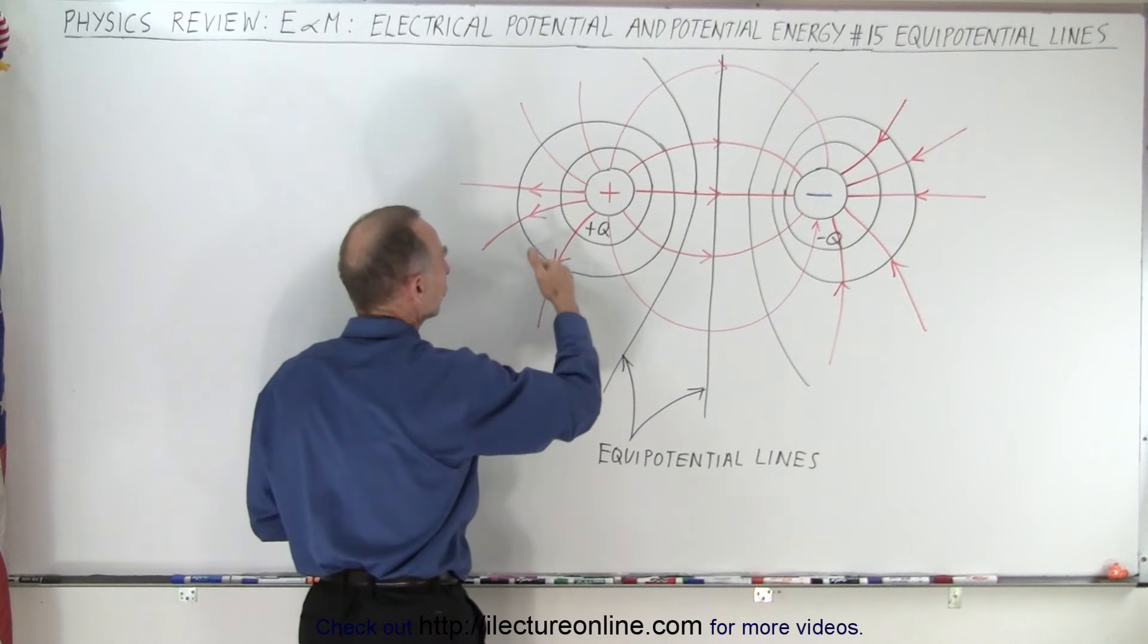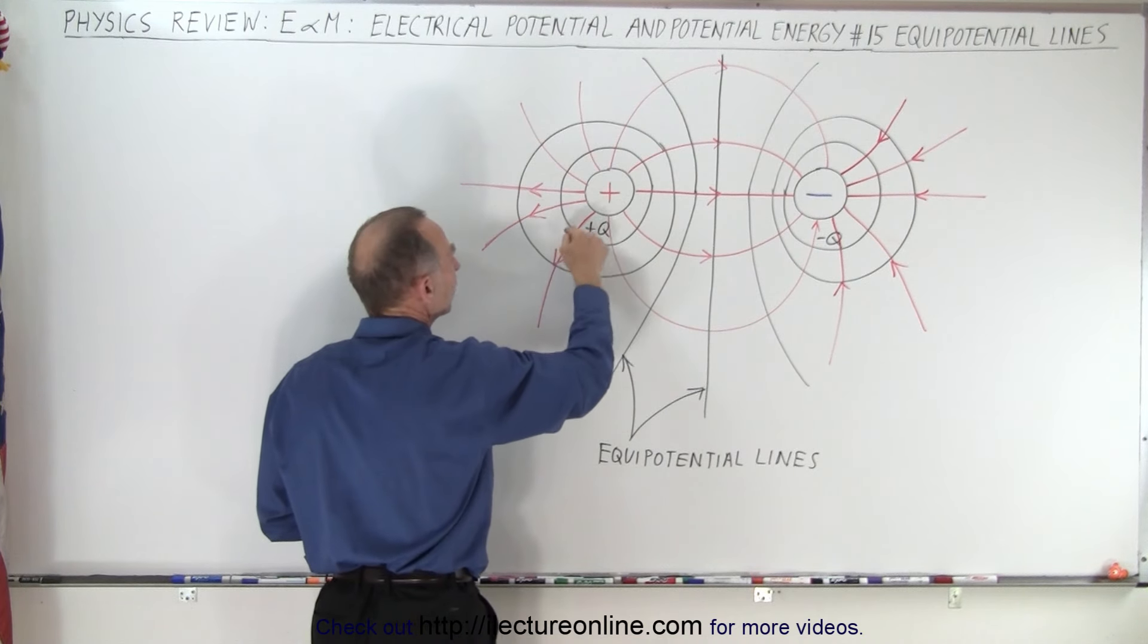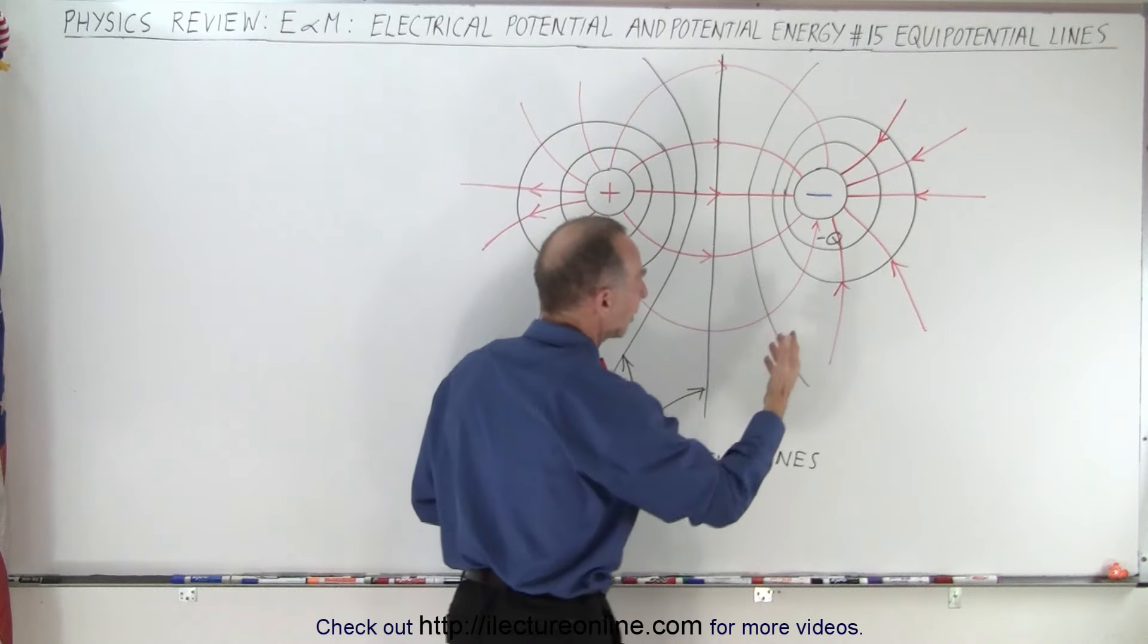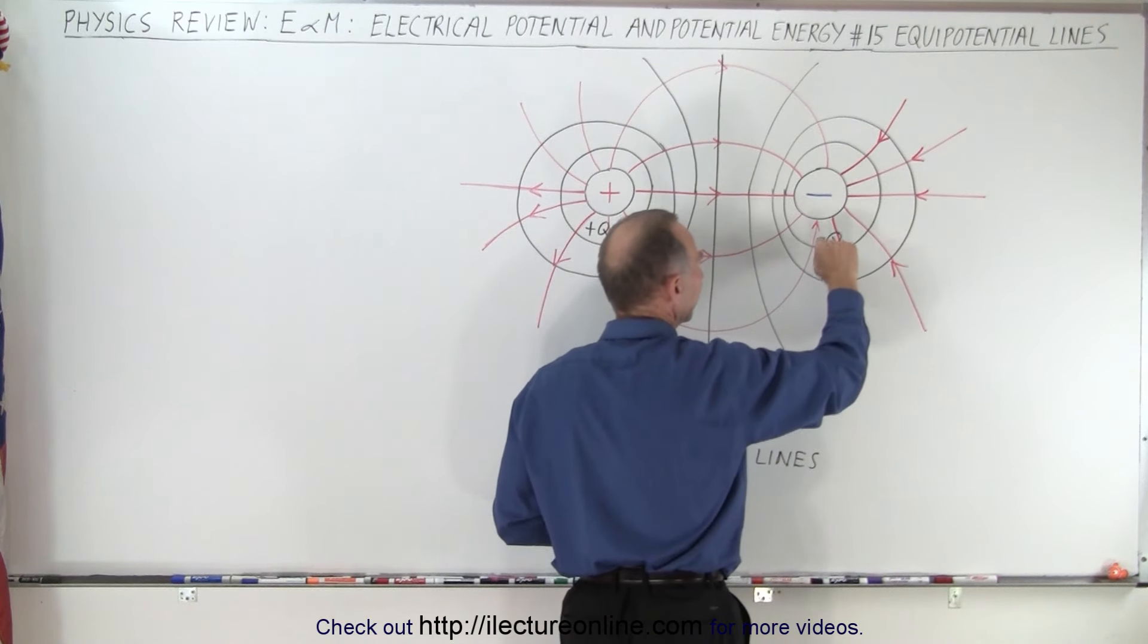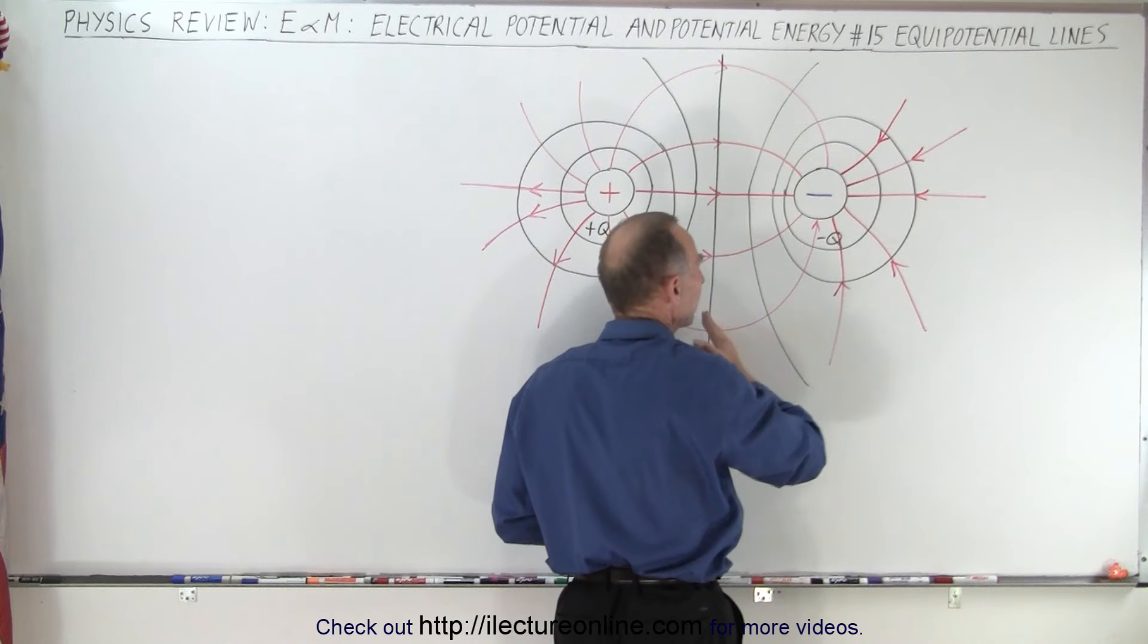And notice that as you get closer to the positive charge, the potential will go up, so this is higher potential, this is lower potential. And vice versa, the closer you get to the negative charge, that's lower potential, and then of course the potential goes up.